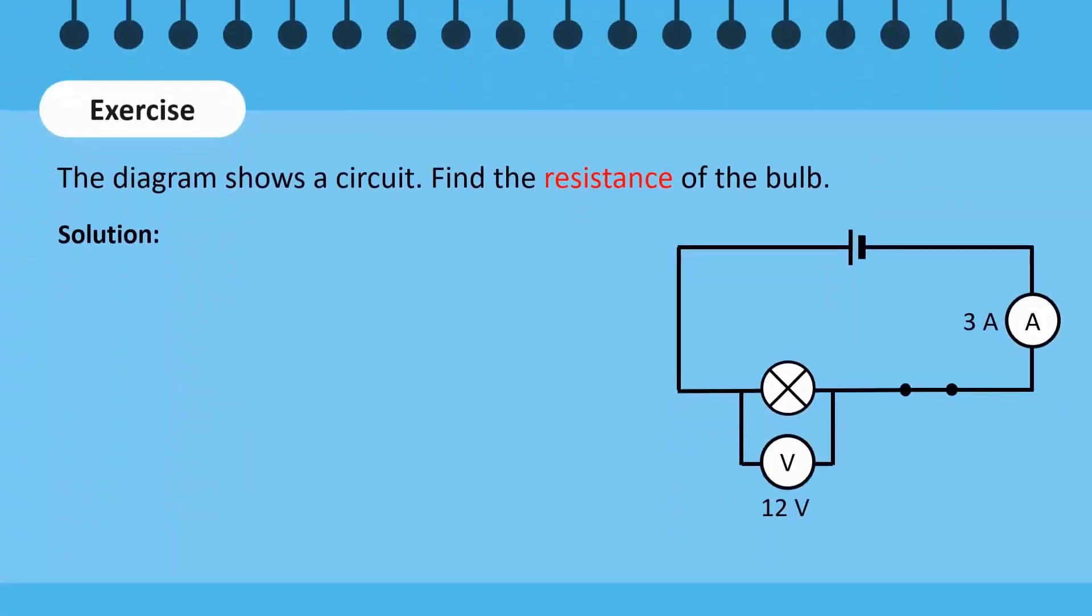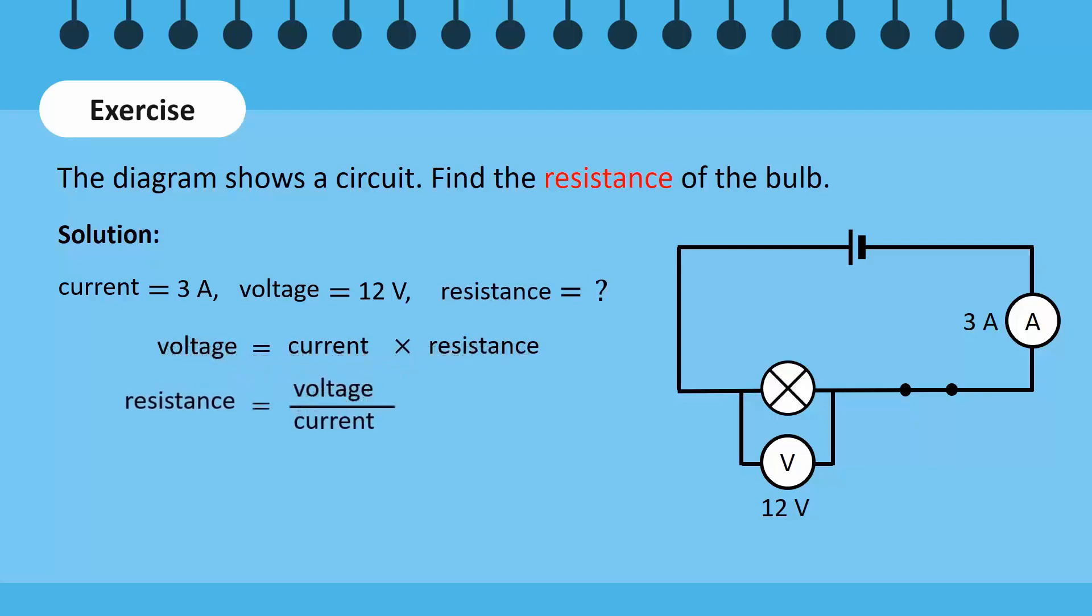Let's solve. The reading on the screen of the ammeter indicates that the current across the circuit is 3 amperes. The reading on the voltmeter shows a voltage of 12 volts. To find resistance, let's write the formula first. By rearranging the formula, we say that resistance equals voltage over current.